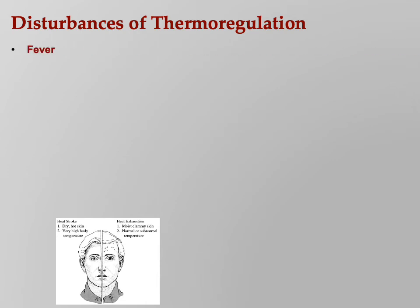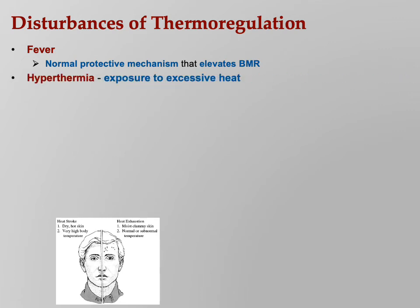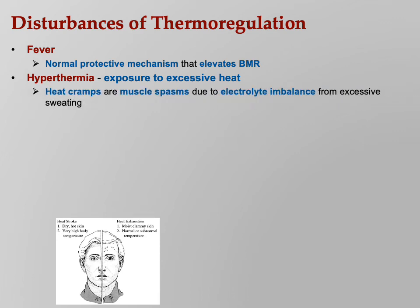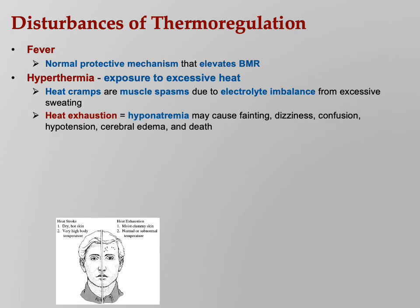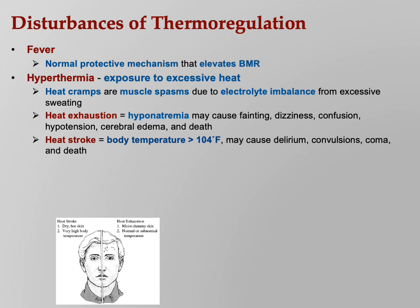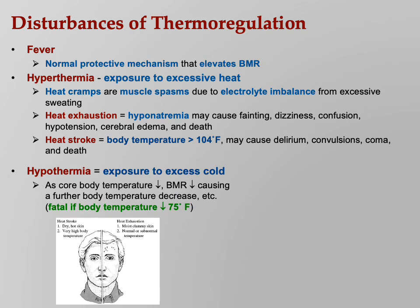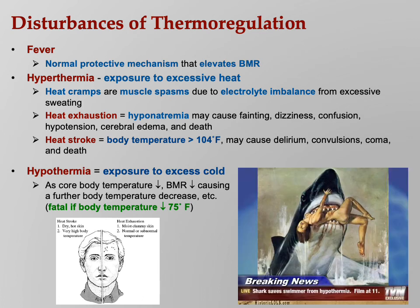Disturbances of thermoregulation: fever is a normal protective mechanism that elevates BMR. Up to about 102°F, you can let a fever run. Hyperthermia includes heat cramps — muscle spasms and electrolyte imbalance — and heat exhaustion, more properly called hyponatremia, which is a lack of sodium. Symptoms include fainting, dizziness, confusion, hypotension, cerebral edema, and death. Hyponatremia is serious — it kills more people than dehydration does. Heat stroke occurs when body temperature exceeds 104°F; symptoms include delirium, convulsions, coma, and death. Hypothermia: if your body temperature drops to 75°F, you die — there's a little more leeway with hypothermia than hyperthermia.